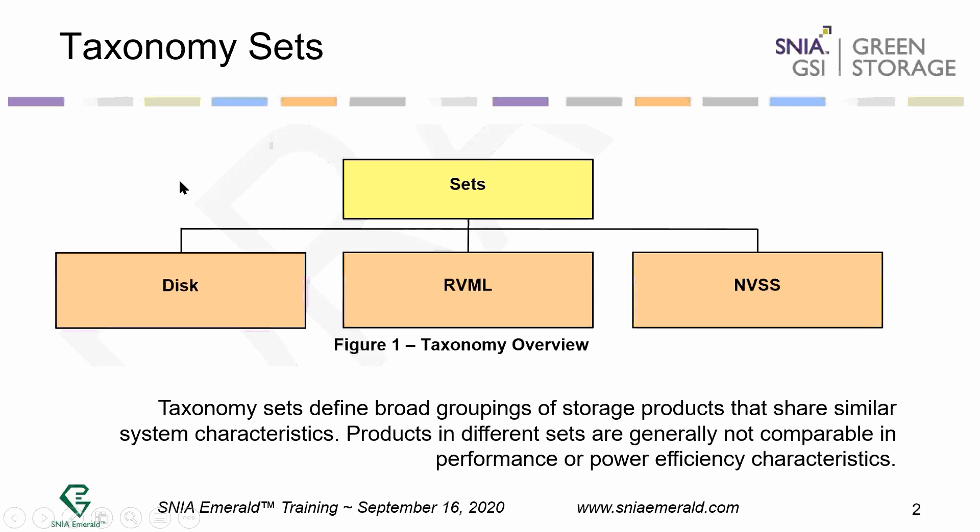We've made some broad changes in the taxonomy based on access types. We created something called sets. A taxonomy set is defined as broad groupings of storage products that share similar characteristics. Products in different sets are generally not comparable in performance or power efficiency characteristics. We've defined the sets as: disk access, which is spinning media; RVML, which is removable and virtual media libraries; and NVSS, which is non-volatile solid-state storage types of products.